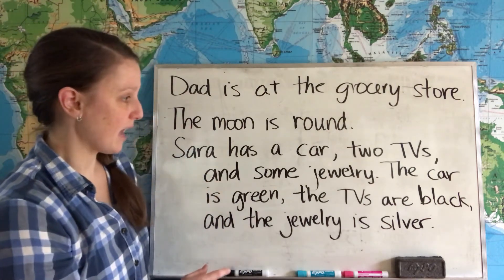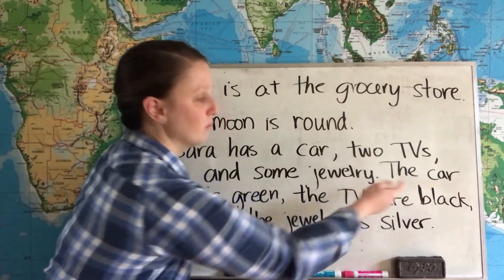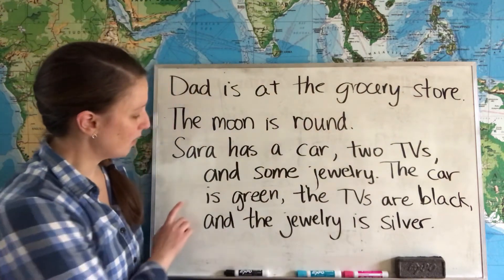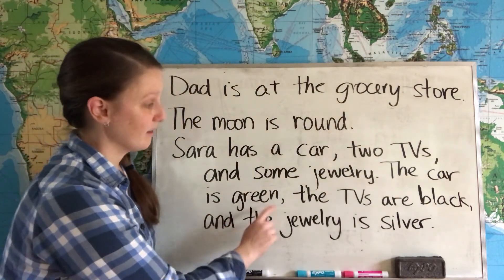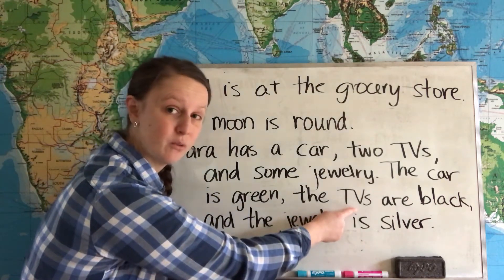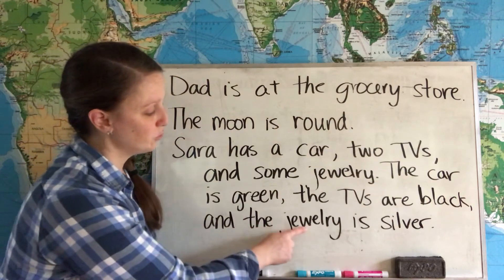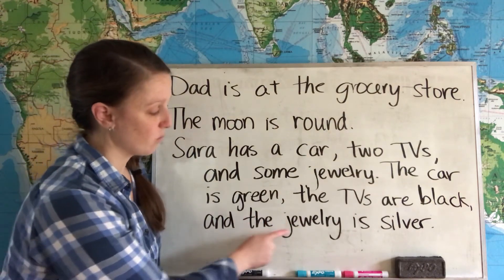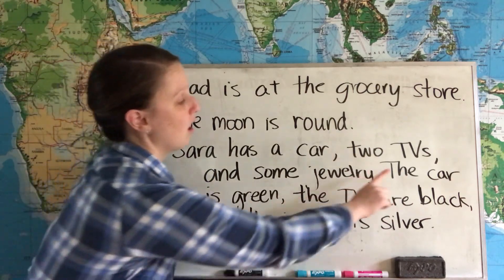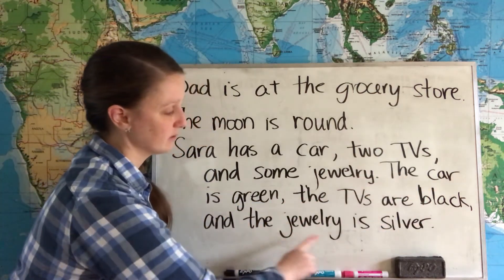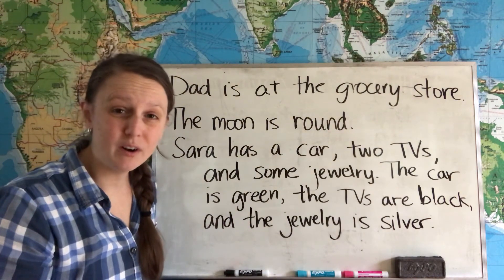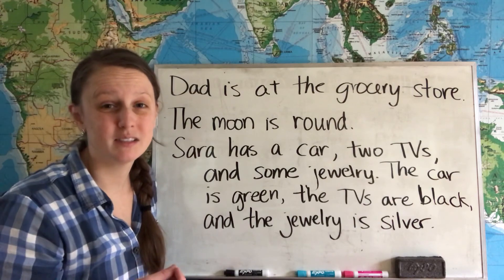We can say 'the car' — we can use 'the' with a singular noun. The car is green, the TVs are black — we can use 'the' with a plural noun. And the jewelry — we can use 'the' with a non-count noun. The important part is that in all of these examples, it's the second time we mentioned those nouns, so we already know the specific ones we are talking about.